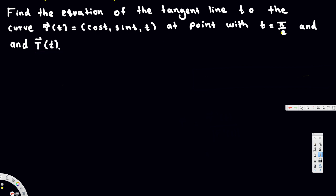To find the point, we plug t = 5π/2 into the given function. So r(5π/2) gives us: cos(5π/2) = 0, sin(5π/2) = 1, and t = 5π/2. So our point is (0, 1, 5π/2).